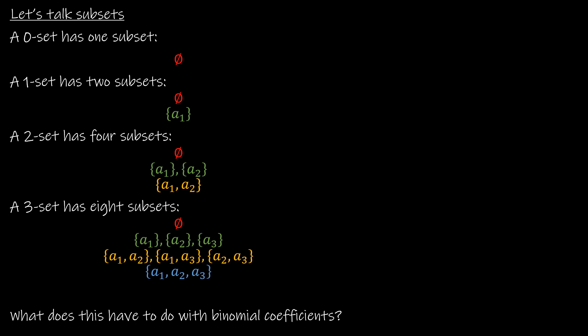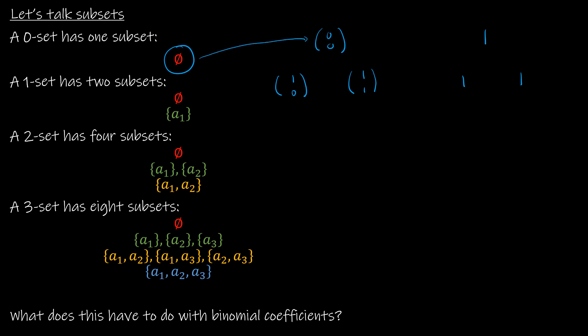So the question becomes: what does this have to do with Pascal's identity and triangle and binomial coefficients? Well, let's take a look. This first one is C(0,0) — zero choose zero. So I have zero items in my subset. Zero choose zero equals one, so there's just one way to choose zero items. If I have a one set, I can either choose zero of them — one way to do that — or choose one of them — one way to do that. So: C(0,0), C(1,0), C(1,1).